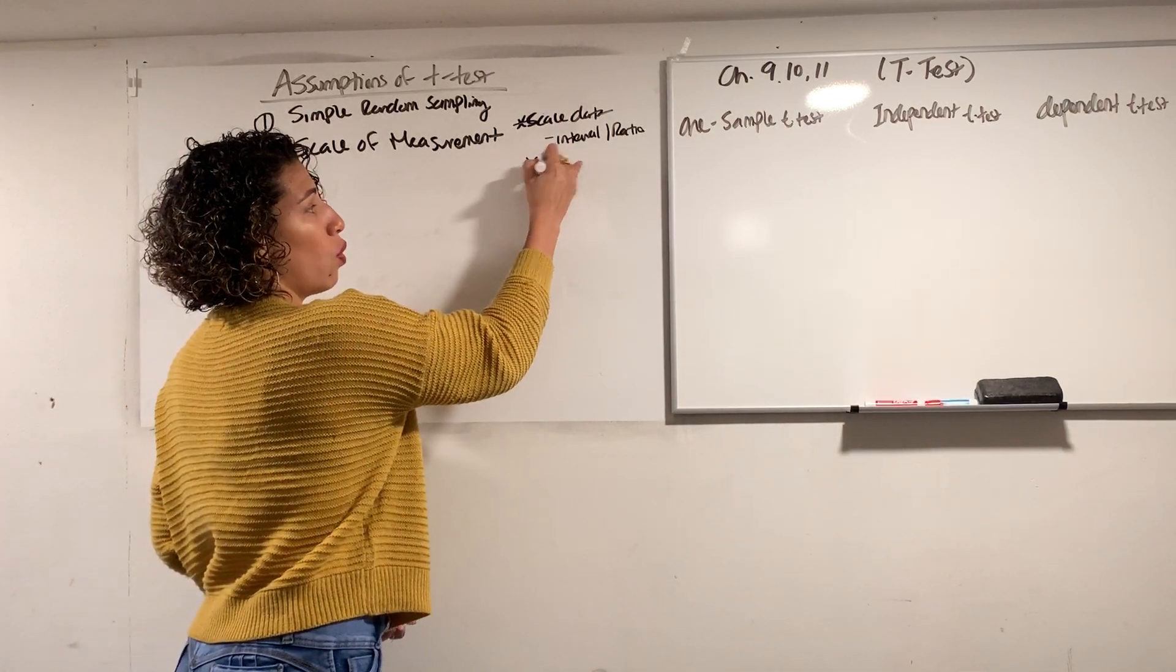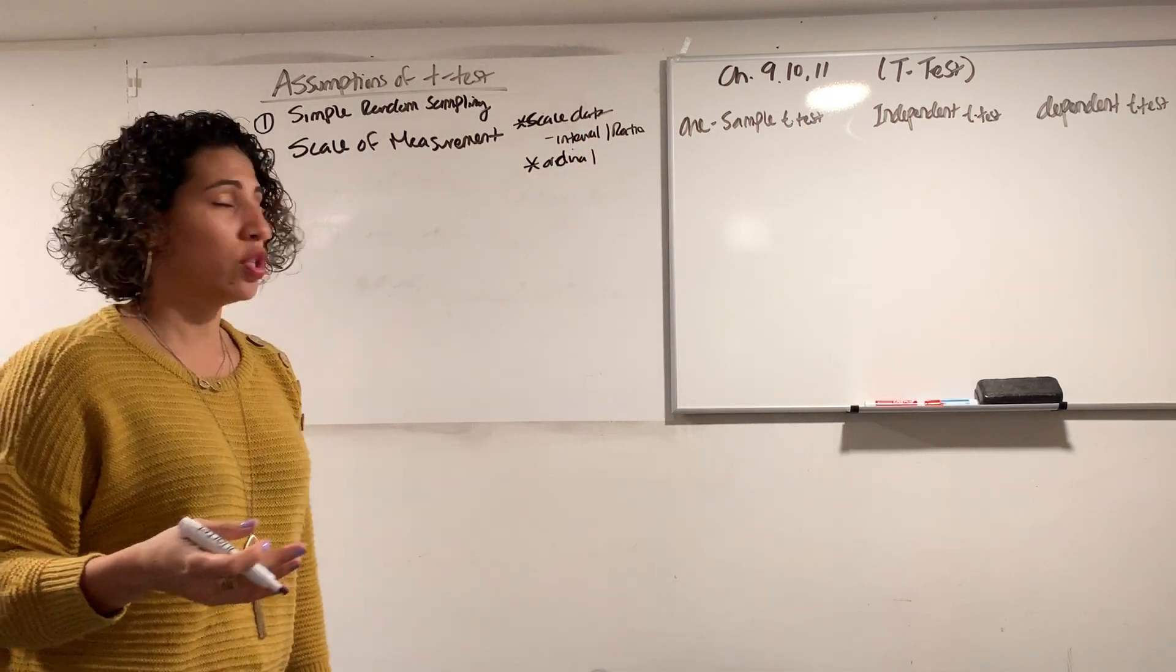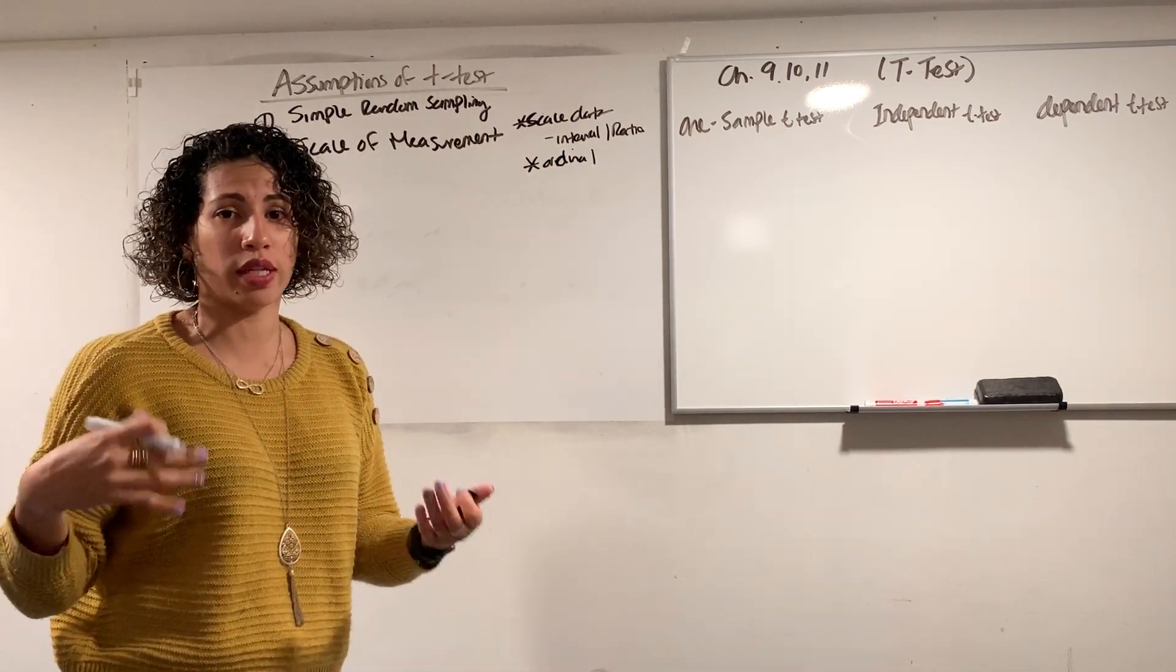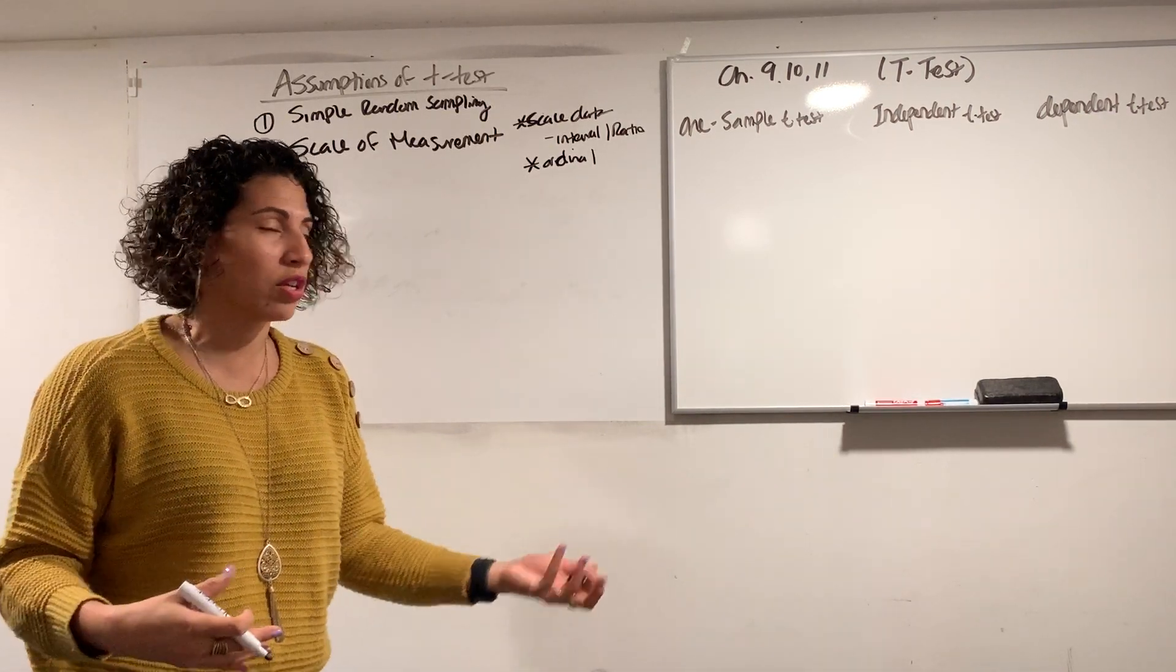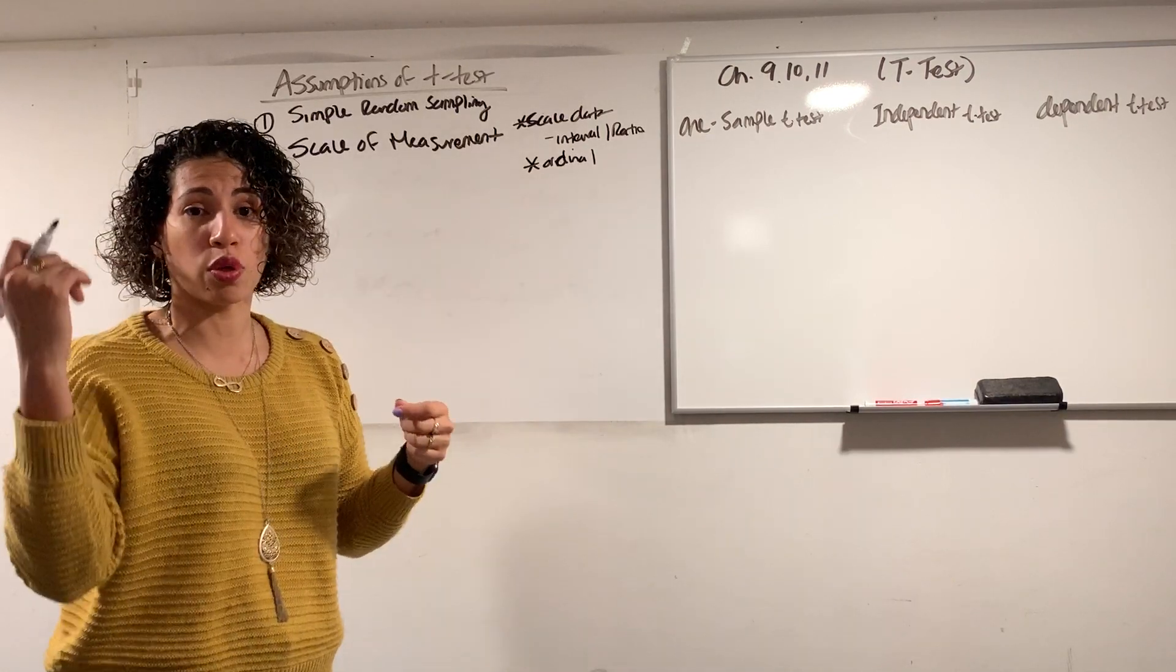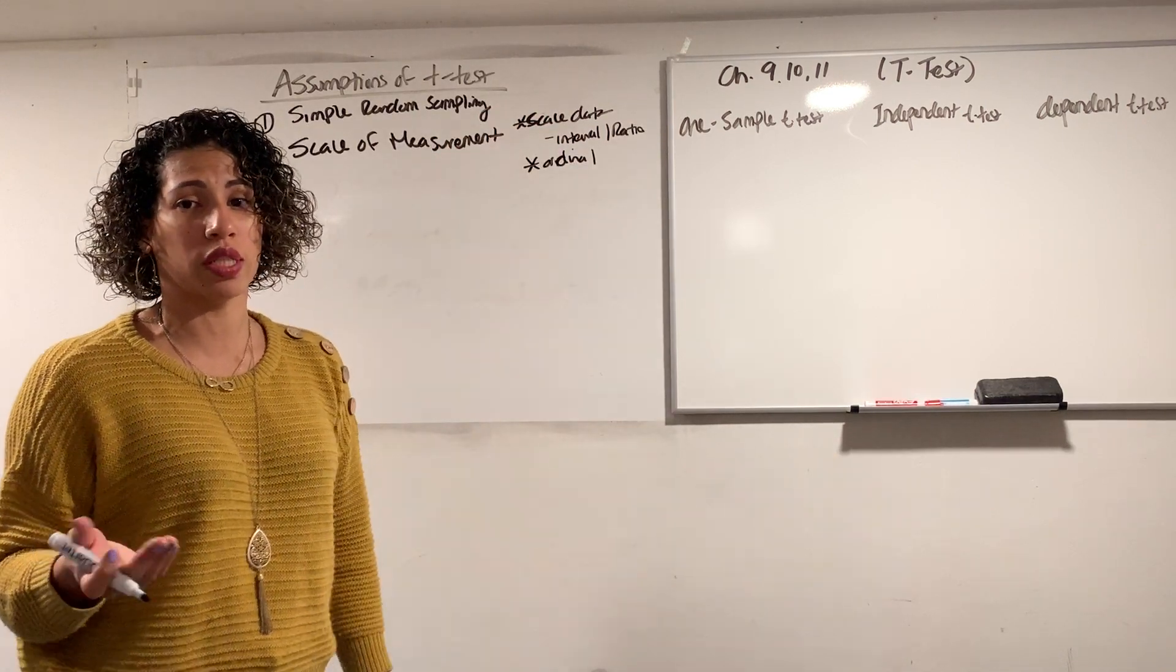Or you have ordinal data. Ordinal data is ranking. So think about ranking data, like if you're talking about first place, second place, third place, college, sophomore, junior, senior. So when you're talking about ranking, that's ordinal data. So data that's going to produce some type of statistical rank or it's going to produce some type of interval ratio are the ones that are used in the t-test.